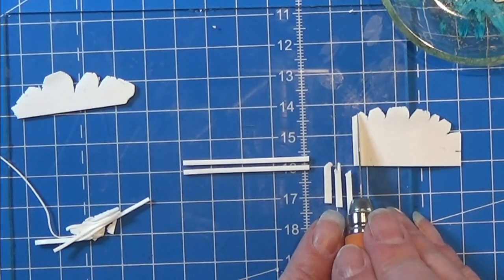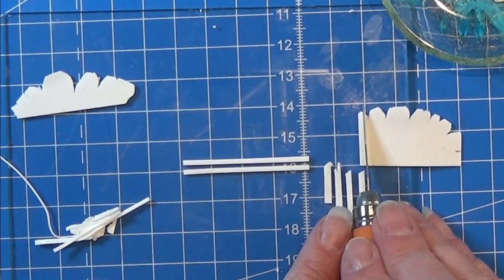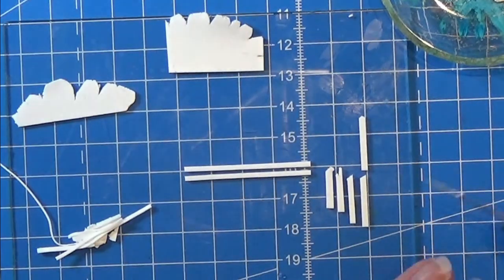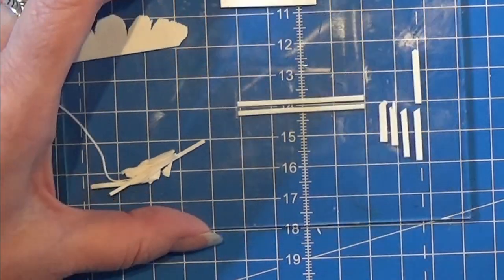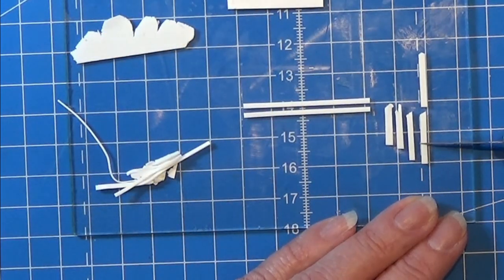I rolled out some white clay in the thinnest setting on my pasta machine, and first of all I cut two really long pieces here with a little space in between them.